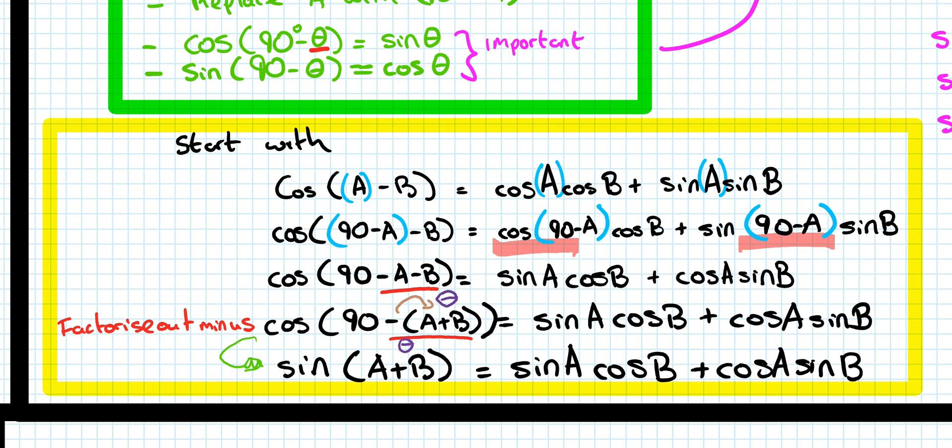That underlined red section, I feel, is the hard step that people forget about. And treat that bracket as theta. So I have a purple theta drawn in above it, so it's cos of 90 minus theta would end up being sin of theta.